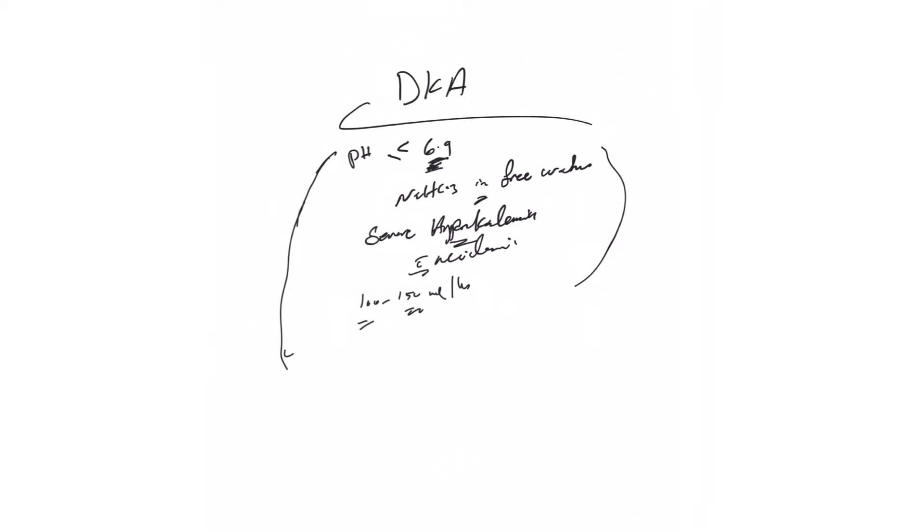Alright, next let's talk about another use of bicarb drip, which is to prevent contrast-induced nephropathy, which is another controversial thing. Some people use it and some not.